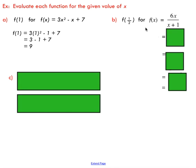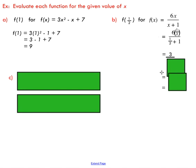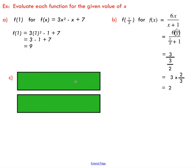A more difficult example: evaluate this function when x is one half. We substitute one half in — six times one half on top gives three; one half plus one on the bottom gives three over two. Remember, dividing by a fraction is the same as flipping the fraction and multiplying, and we end up with two as our answer.